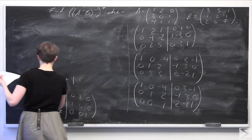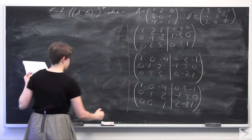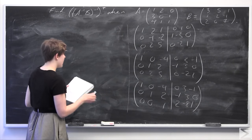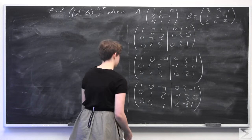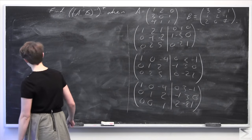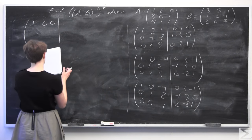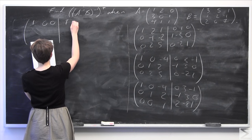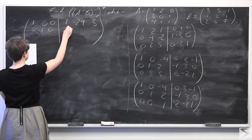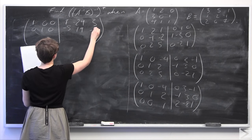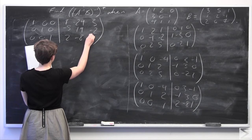We're almost there — we just need to clear out the final column to get the left-hand side into reduced row echelon form. From the second row I subtract two times the third row, and to the first row I add four times the last row. We end up with the identity matrix on the left-hand side. The right-hand side gives us: row 1: 8, -29, 3; row 2: -5, 19, -2; row 3: 2, -8, 1.